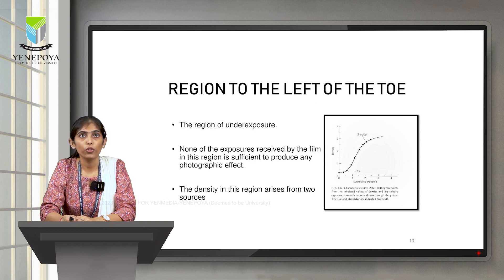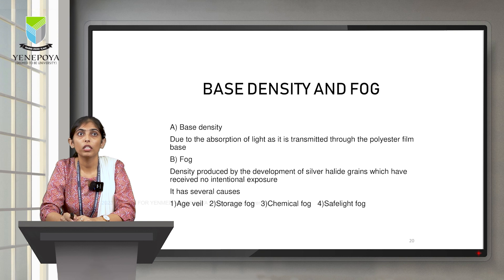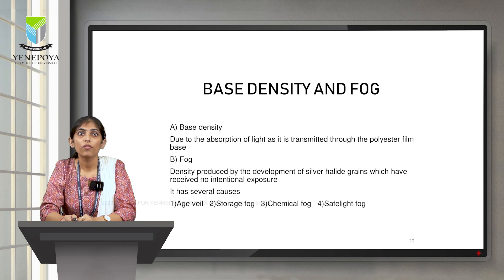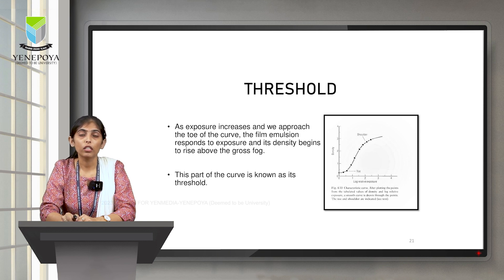The region to the left of the toe is the underexposed area where the film will not respond to any radiation. The density in this region arises from two sources. First is base density, which occurs due to the absorption of light as it is transmitted through the polyester film base. The second is fog, which arises when silver halide grains that received no intentional exposure are developed — caused by age, storage fog, chemical fog, or safe light fog. As exposure increases, the film starts responding and the density rises above the gross fog level; this point is known as the threshold.